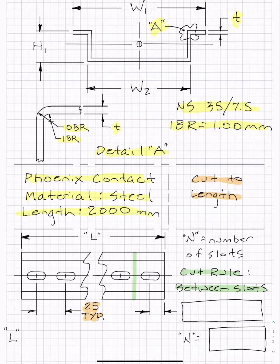So the first thing we're going to do is determine what this distance is over here between the edge of the DIN rail and the first slot. And that distance is going to be, based on our rule, is going to be 25 divided by 2, which is 12 and a half. So we know that edge distance is going to be 12 and a half.